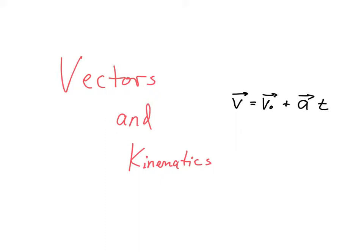The kinematics equations are actually vector equations, and so I've rewritten one of the kinematics equations here. This is vector v, the final velocity vector, equals the initial velocity vector plus the acceleration vector times time, which is a scalar. So what we're really doing here is a vector addition problem, v0 plus the product of these two.